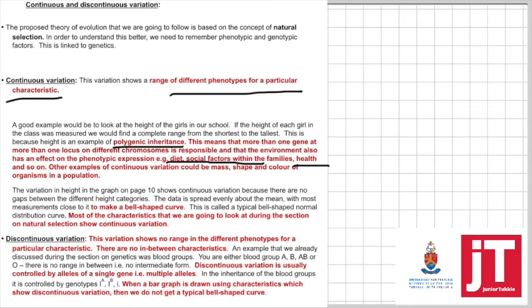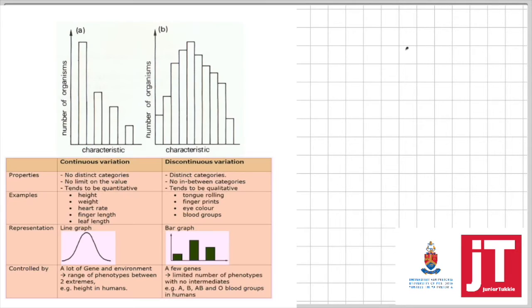The graph that we use to explain continuous variation is a bell-shaped curve graph. Discontinuous variation: there's no range in the different phenotypes. There's no polygenic inheritance. You either have the allele or not. If you look at the graph that you have here, you can see there's the bell-shaped curve graph that I draw, so this will be continuous variation. This here is a bar graph. This will be discontinuous variation.